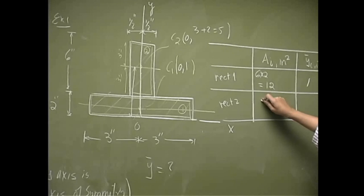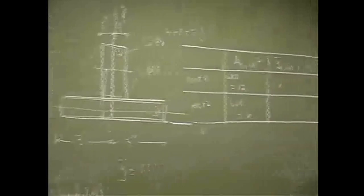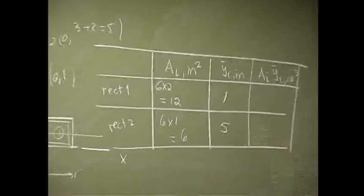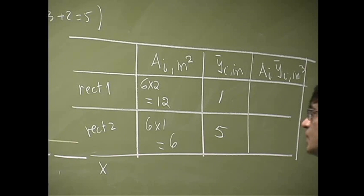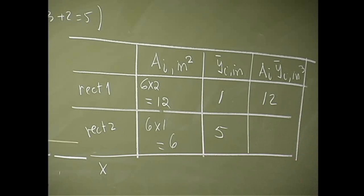So the area by itself is 6, width is 1. So that's 6. And the coordinates, the y is 5. Then we take the product. This 12 times 1 is 12. 6 times 5 is 30.